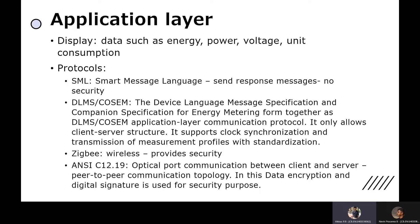The third protocol is Zigbee. It is a wireless technology developed for low-cost, low-power applications and is a wireless IoT network. The fourth protocol is ANSI C12.19, which is an IEEE standard. It is a communication standard for the utility industry and is used for utility meter networks of a Smart Grid.